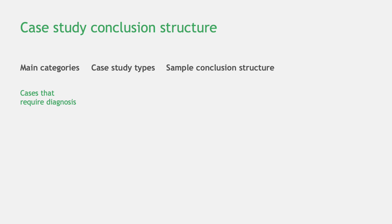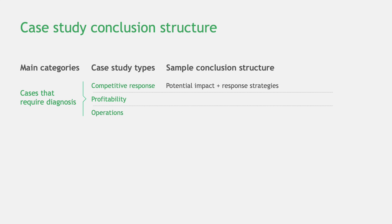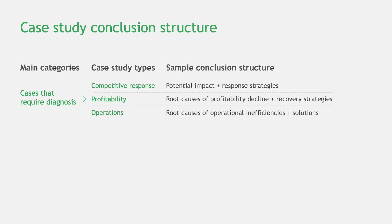Now that we've discussed how to keep your recommendation concise, let's delve into the structural aspect of your conclusion. Consider two distinct case types. The first deals with specific issues that need a diagnosis, like competitor response, profitability, and operations cases. For those case types, start your recommendation with your diagnosis. For a competitive response strategy case, first explain the potential impact and the reasons behind it, then move on to the response strategies. In a profitability case, outline the root causes of the profitability drop before discussing recovery strategies. For operations cases, describe why there might be operational inefficiencies before sharing solutions. Always end with a quick mention of risks and next steps.